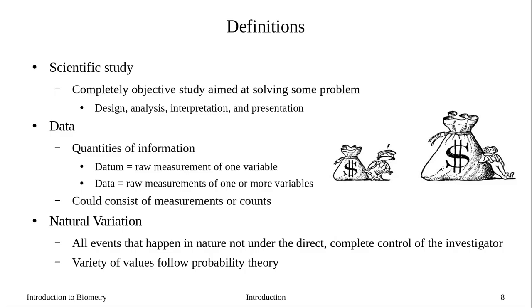Fortunately, a lot of this variation tends to follow probability theory. If we know the outcome is continuous and follows a normal distribution, then the errors also tend to follow a normal distribution. Because we have probability theory, we can use math to control for all of the natural variation and then return to our experiment and say, yes, growing plants with Miracle-Gro increases height by, say, one and a half to two times.